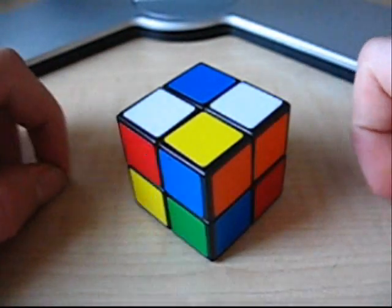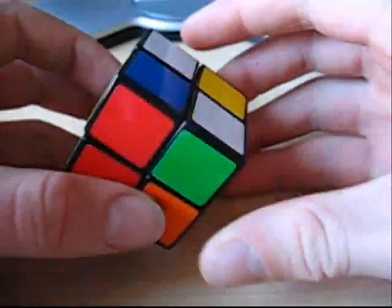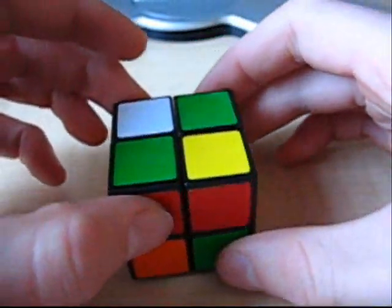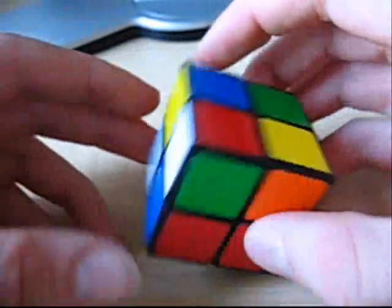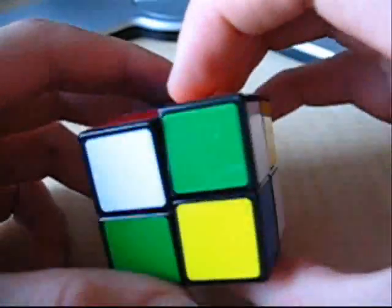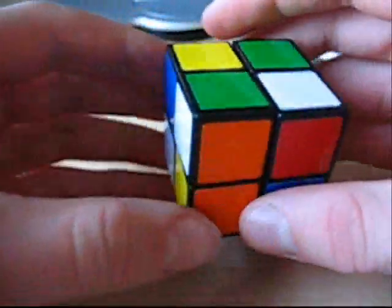So the first thing you want to do when you're solving the 2x2, is just like the 3x3, make the first layer. So you can either have your layer on the top or the bottom. Doesn't really matter. I choose to put it on the top. It's just easier to see for me, but you can put it wherever you want.